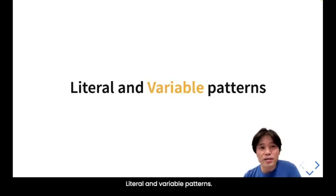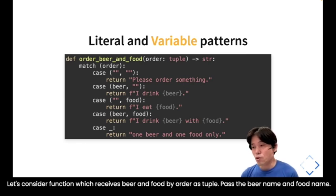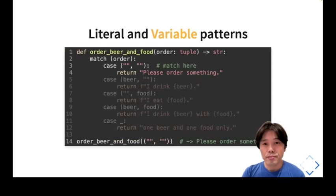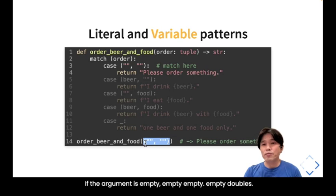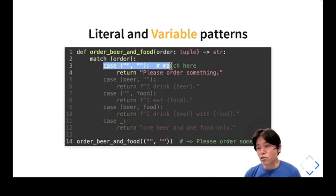Here are literal and variable patterns combined. Consider a function that receives a beer and food order as a tuple — first element is beer name, second is food name. If the argument is an empty tuple, the pattern 'case (), ()' will match and return 'please order something'.